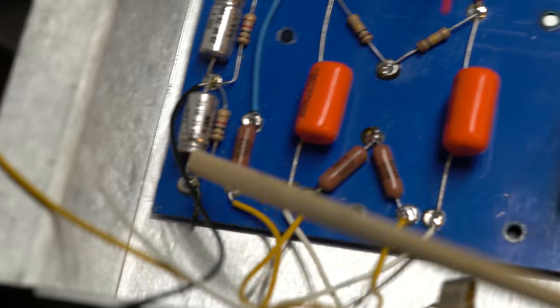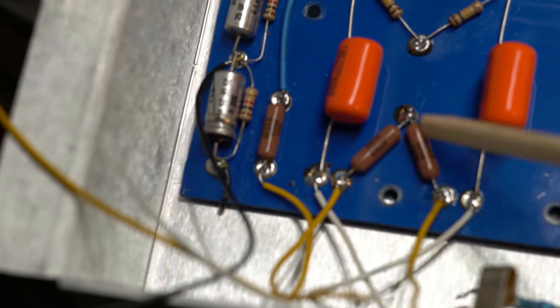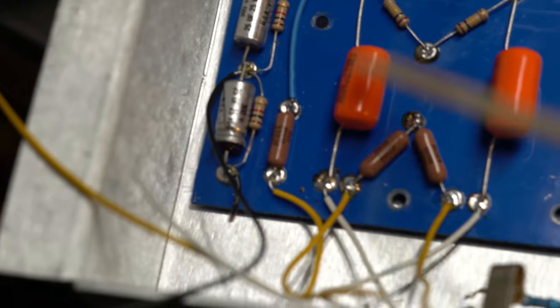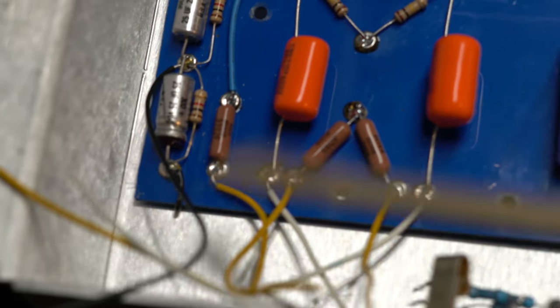They connect in through here and they ground out through there. We have this is the 33k, these are two 68ks that are the inputs that will then connect off to the tubes. And these are my power droppers that connect into the outputs and then jump off and go to the tone pots and whatnot.